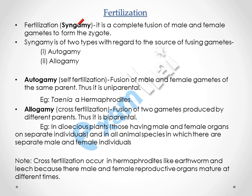So what is fertilization? It is the complete fusion of male and female gamete — the male gamete which is sperm and the female gamete which is ovum — and both fuse to form a zygote. The other name of fertilization is syngamy. Syngamy is of two types with regard to the source of fusing gametes: autogamy and allogamy.